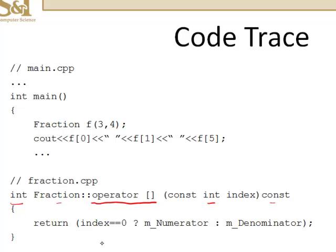Well, if the index that's passed to the function is 0, we're going to return the numerator. And otherwise, we'll return the denominator of the calling object.